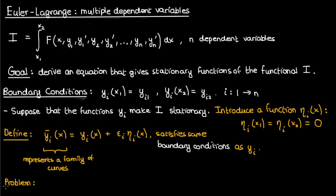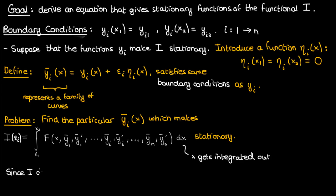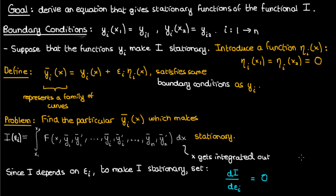What I want to do is find the particular yi in this family that makes our functional I stationary. Notice that the quantity I depends only on the parameter epsilon_i. Why? Because x gets integrated out from this definite integral, which means that once you integrate and apply your limits to end up with the functional, the only parameter or variable remaining in the final expression is epsilon_i.